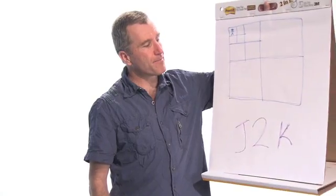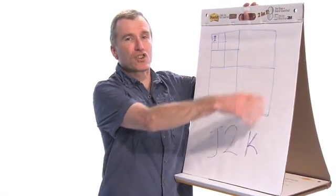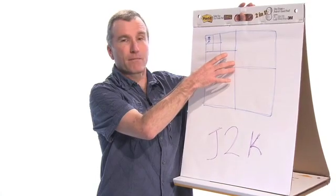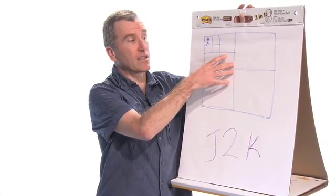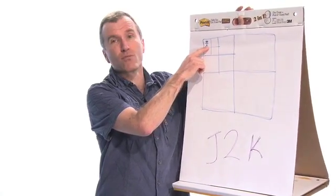JPEG 2000 however works quite differently. What JPEG 2000 does is it takes the big picture and it filters it into a smaller picture. And then filters that into a smaller picture and then filters that into a smaller picture again.